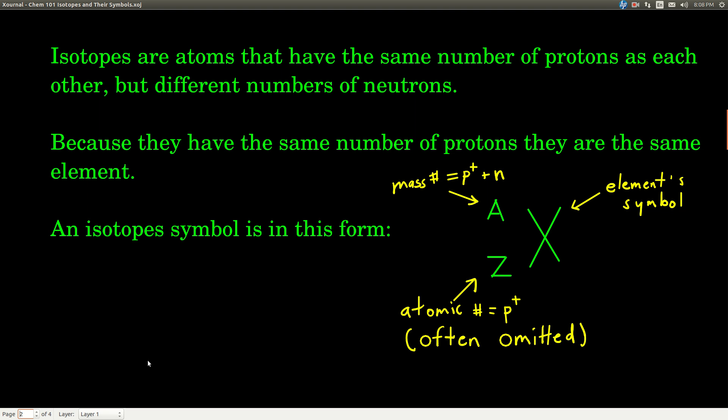We call these isotopes. Isotopes are atoms that have the same number of protons as each other but different numbers of neutrons. They're the same element because they have the same number of protons but they have a different mass.